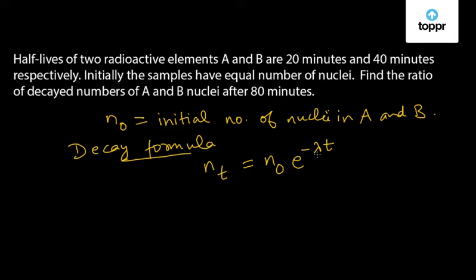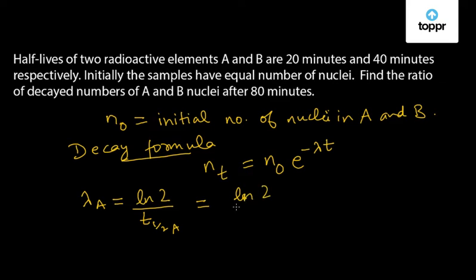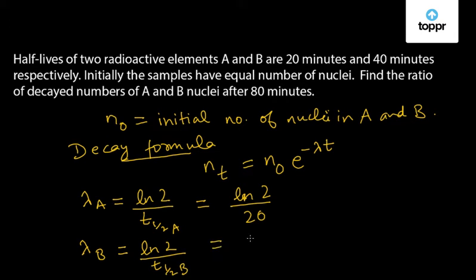We can calculate the decay constant for both radioactive elements A and B. The decay constant for A, lambda A, is given by ln of 2 divided by the half life of A, which is 20 minutes. Similarly, the decay constant for B, lambda B, is given by ln of 2 divided by the half life of B, which is 40 minutes — so ln of 2 by 40.